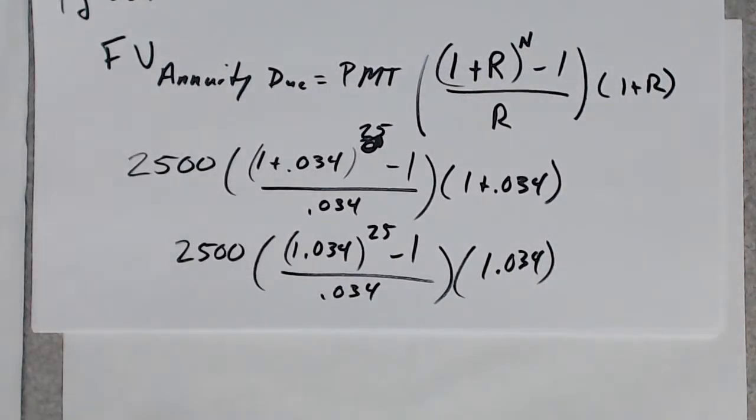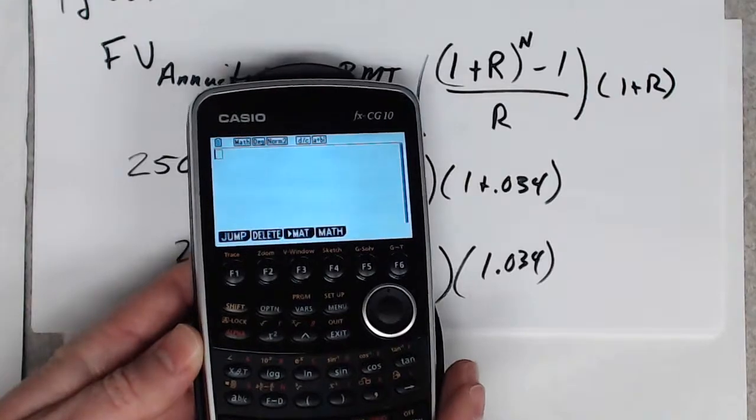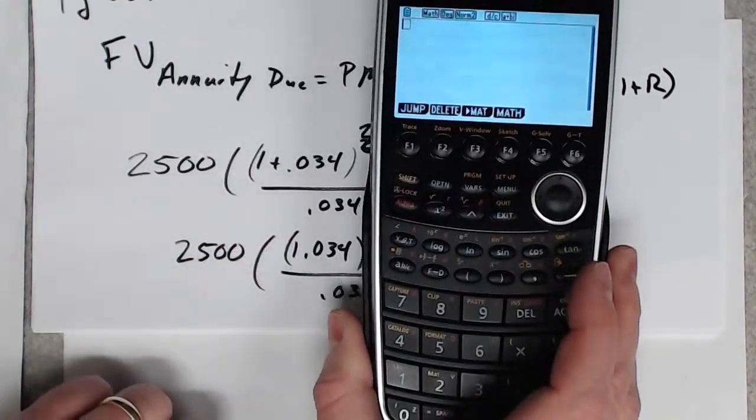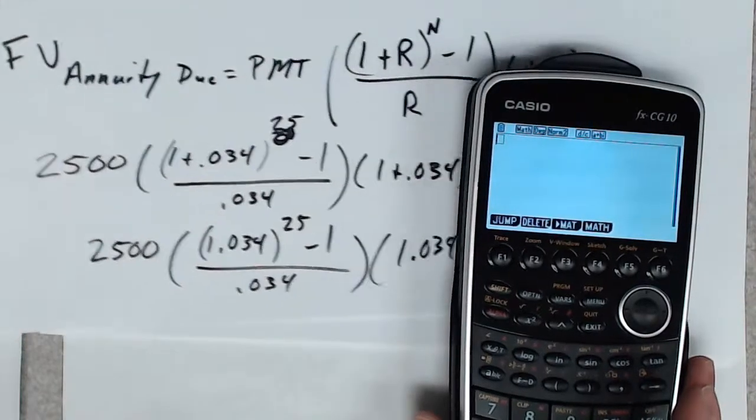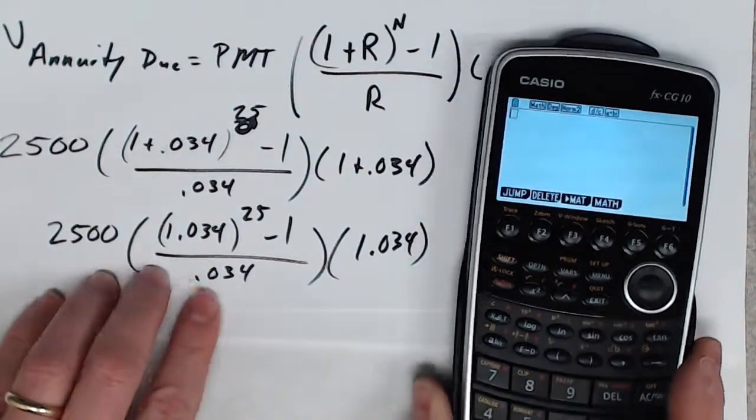My calculator will actually allow me to type this all in at once. I've got a Casio prism, is what it's called. But in any case, just make sure you use a calculator that you know how to work. I'm going to type this all in at once.